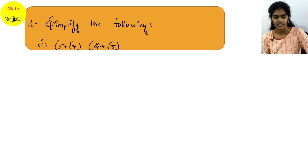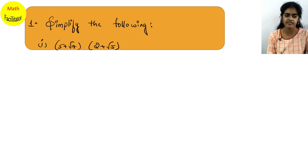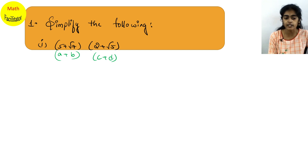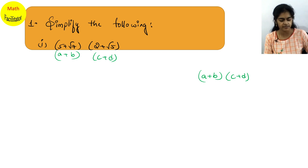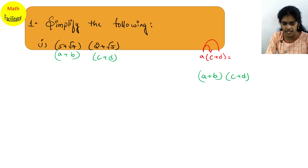Let's proceed. The first question is to simplify the following expression and bring it to a final value. We will be using identities in this question. Here you have something like (a+b)(c+d). Using the distributive property, you multiply a to c and also a to d, giving ac + ad. Similarly, you multiply b to the entire (c+d).